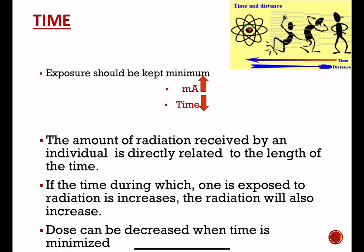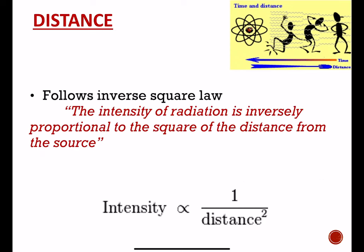Regarding time, the exposure time should be kept to a minimum. By increasing mA and decreasing time, we can reduce exposure. The amount of radiation received by an individual is directly related to the length of time — meaning time is directly proportional to the radiation dose.